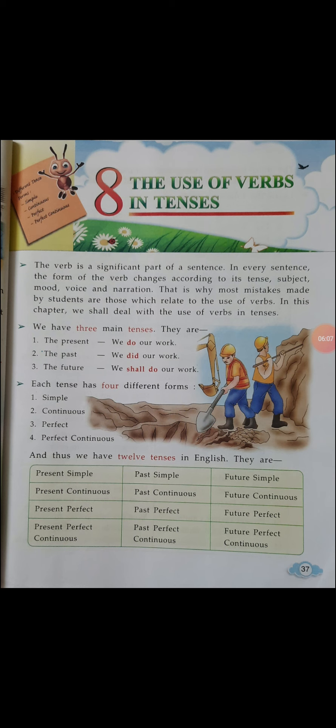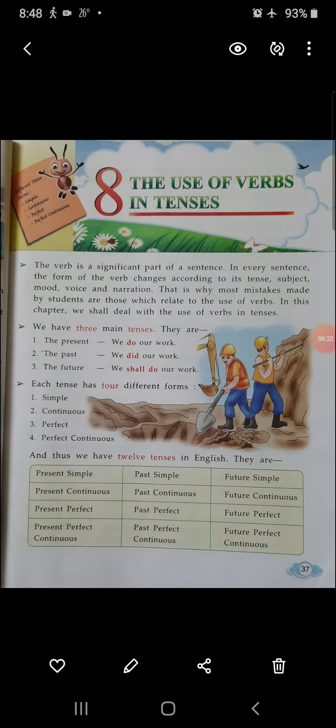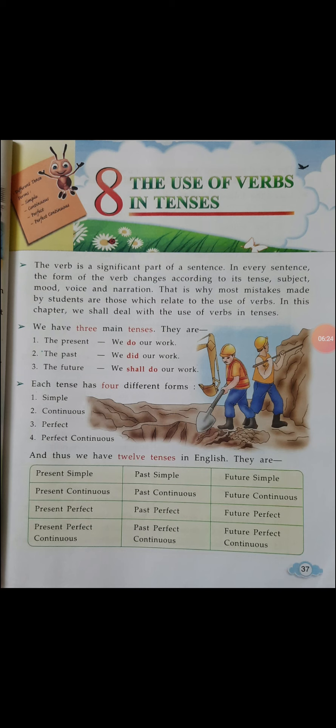Thus, we have twelve tenses in English altogether. They are: present simple, past simple, future simple; present continuous, past continuous, future continuous; present perfect, past perfect, future perfect; present perfect continuous, past perfect continuous, and future perfect continuous. We will discuss these in our next class.